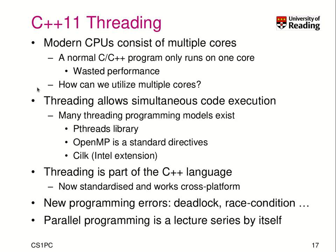The next concept is C++11 threading. Modern CPUs have multiple cores, but when you build a normal C++ program, it runs on just one core, which limits performance. The question is how can you use multiple cores easily? The answer is threading, which you'll learn more about next term in operating systems. Threading allows simultaneous code execution, and there are many different thread programming models. Threading is now part of the C++ language, standardized and working cross-platform.